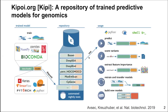The KIPI monthly seminar series is initiated from the community of developers of KIPI. KIPI is a repository for trained predictive models for genomics, released a few years ago, aiming to have a central repository for trained models that can be shared across the community and used in a standard fashion, both for people developing models and people applying them to interpret genomes.